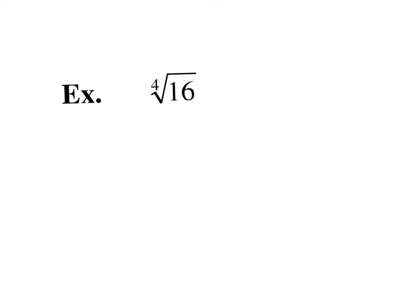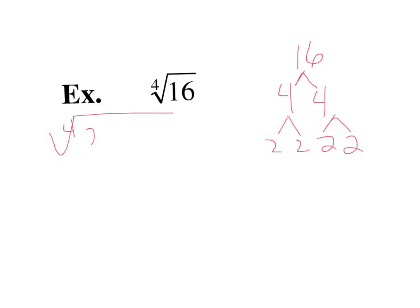The fourth root of 16: if you use the tree on 16, you end up with two times two times two times two. So what number has four factors multiplied together to make 16? That would be two. The fourth root of 16 is two.